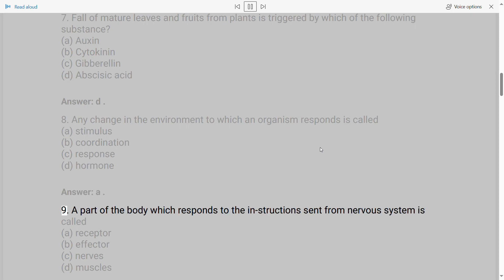9. A part of the body which responds to the instructions sent from nervous system is called A. Receptor B. Effector C. Nerves D. Muscles. Answer: B.